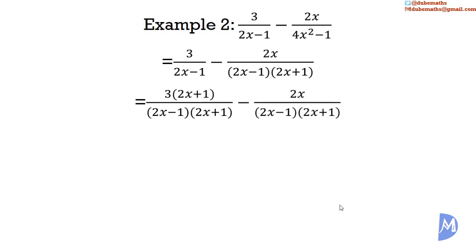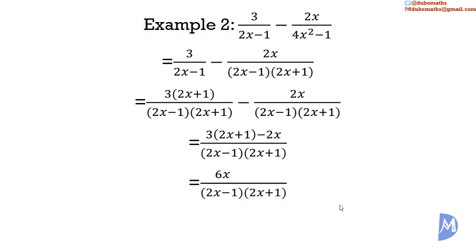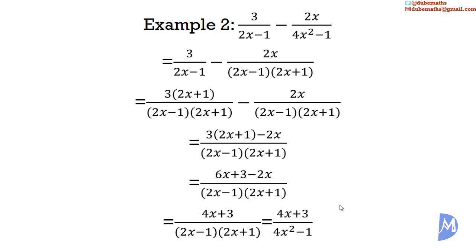Both fractions are over the same denominator, so we can add the numerators. Expanding brackets: 3 multiplied by 2x equals 6x, and 3 multiplied by 1 equals 3, giving 6x plus 3 minus 2x. Adding like terms: 6x subtract 2x equals 4x, giving 4x plus 3. And since (2x minus 1)(2x plus 1) equals 4x² minus 1, this fraction can also be written as (4x plus 3) over (4x² minus 1).